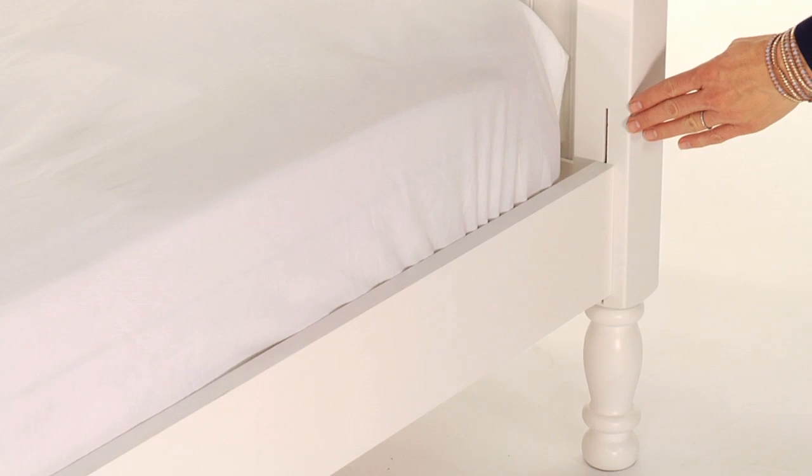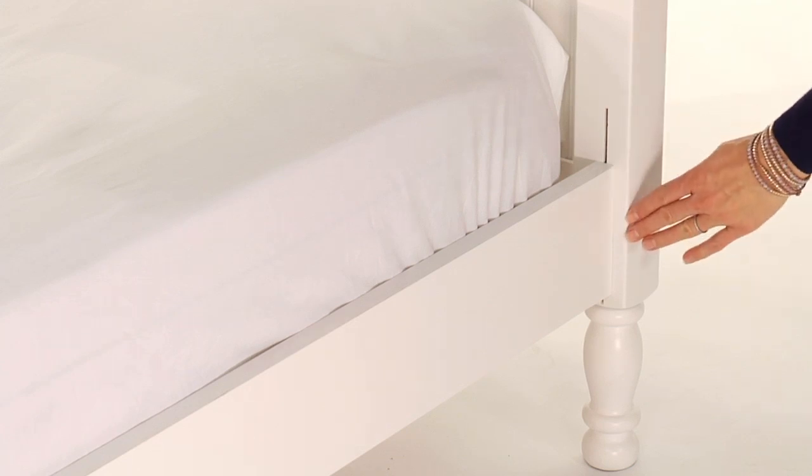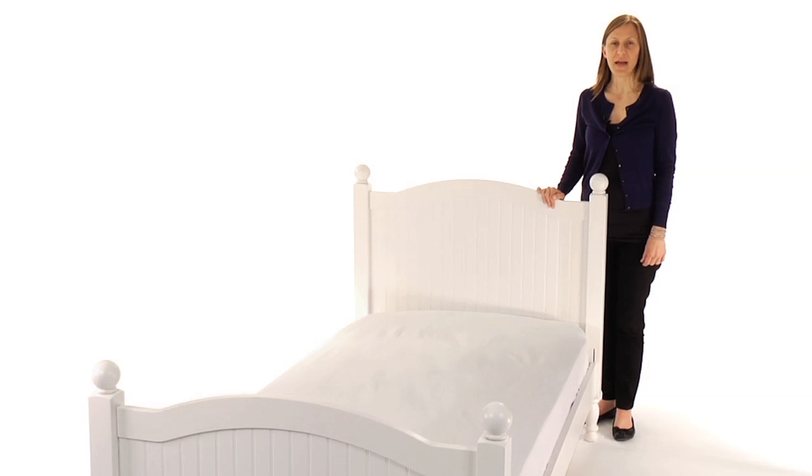The mattress platform can be raised to accommodate our optional trundle or lowered to create a comfortable height for small children. The slat roll foundation allows the bed to be used with or without a box spring.